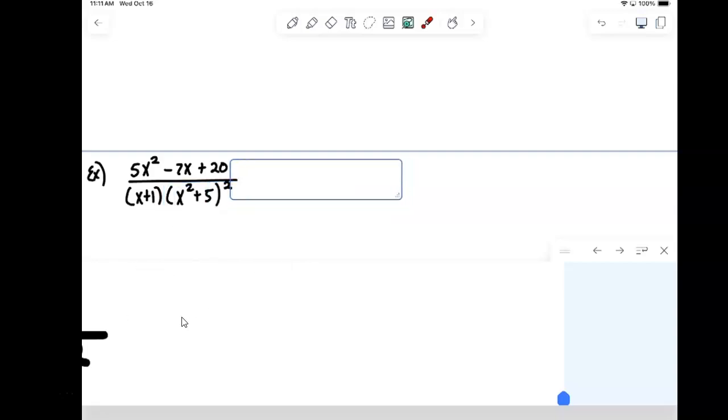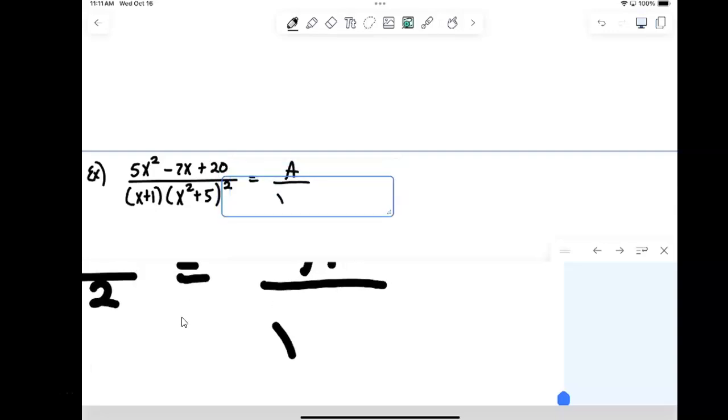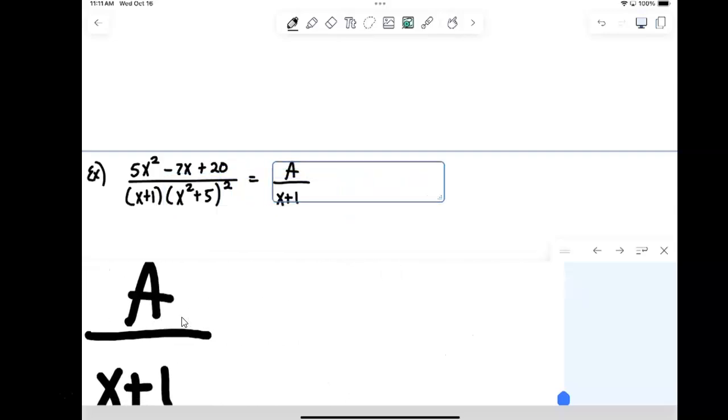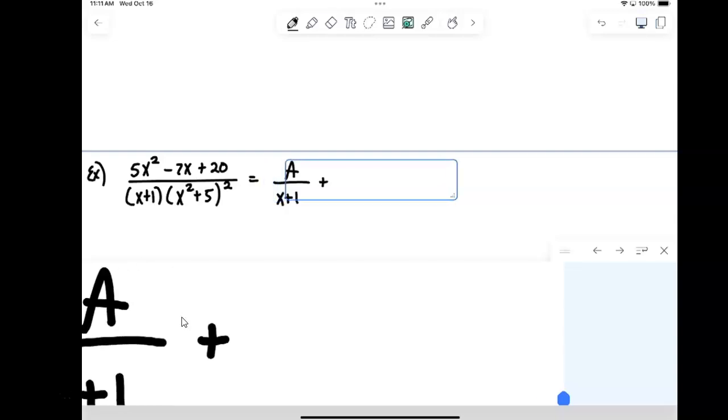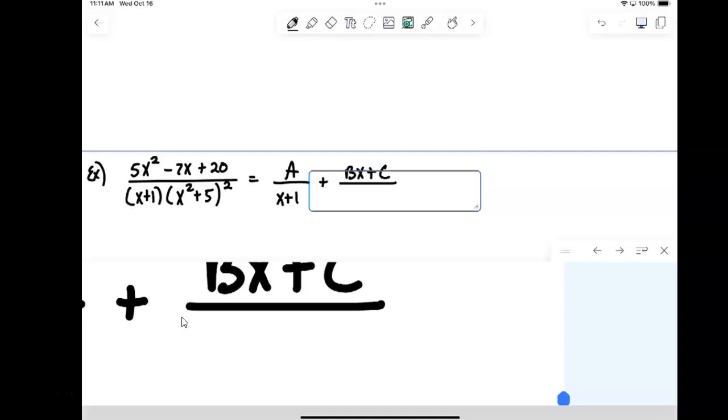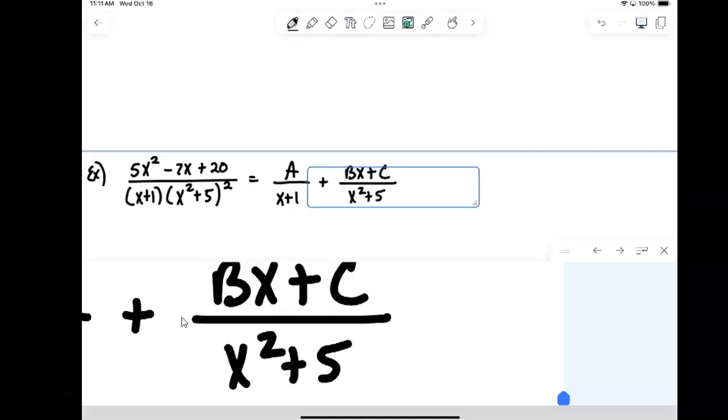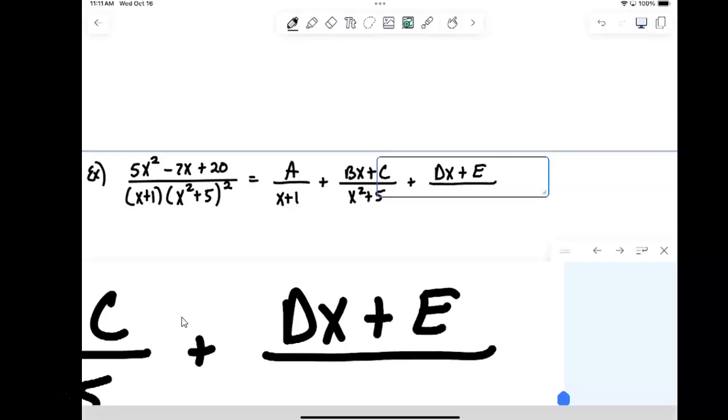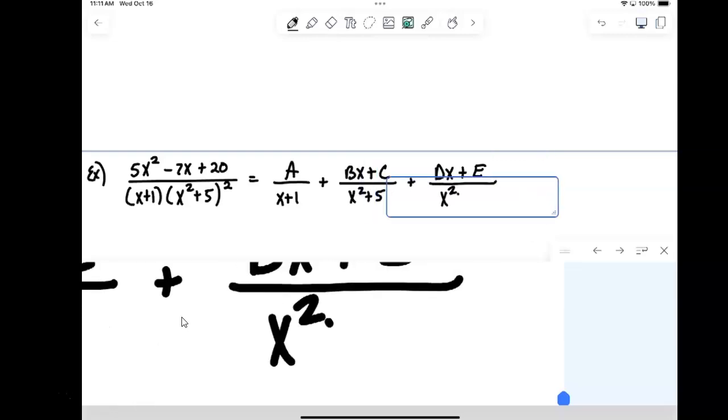So we write the fraction for each piece. For the linear, that would just be a constant over x plus 1. And then because we have a repeated factor, we need a fraction for each piece, each power of it. And because it's a quadratic factor, the numerators will involve linear terms. So we'll have that stuff over x squared plus 5 plus dx plus e over x squared plus 5 quantity squared.